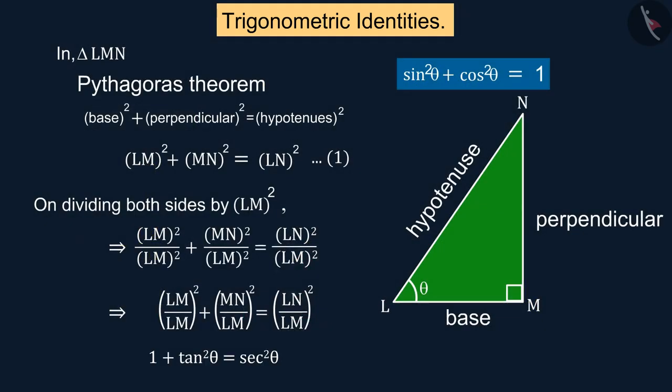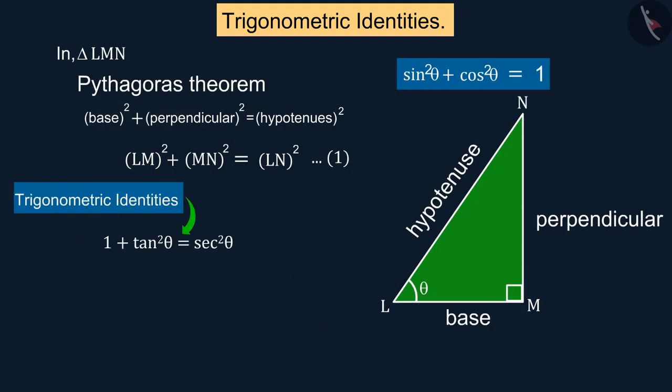This is a trigonometric identity where the value of θ is greater than or equal to 0 degrees and smaller than or equal to 90 degrees.